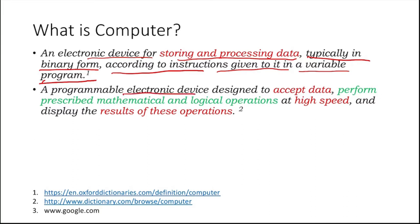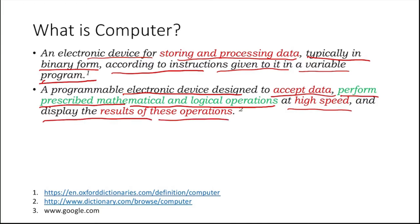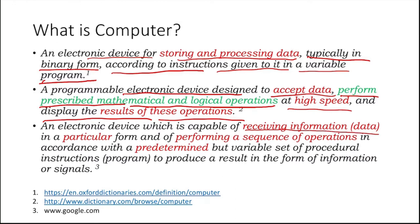Another definition: 'A programmable electronic device designed to accept data, perform prescribed mathematical and logical operations at high speed — definitely we need high speed, otherwise why should we use a computer — and display the result of these operations.' Yet another definition from Google: 'An electronic device capable of receiving information or data in a particular form and performing a sequence of operations in accordance with a predetermined but variable set of procedural instructions.'